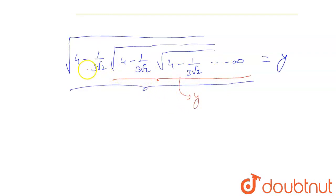This will be also y. Why? Because there are many terms, there are infinite terms in this expression. If we will skip one term, then nothing will happen. It does not matter. If we will skip one term, the whole expression is y, then this expression can also be y.